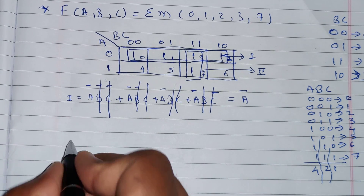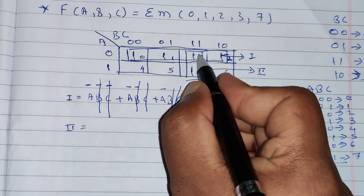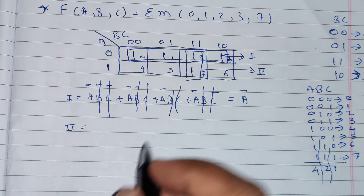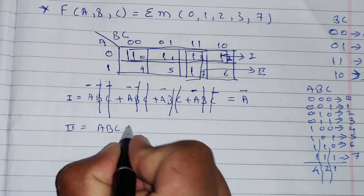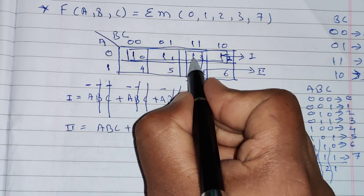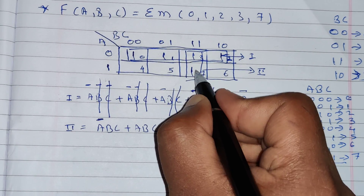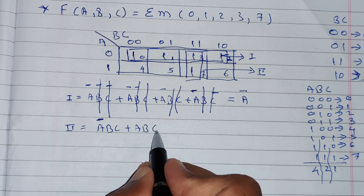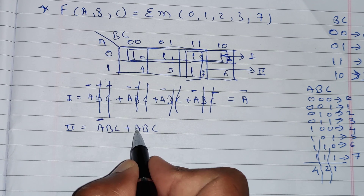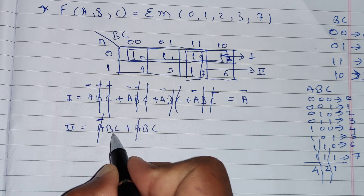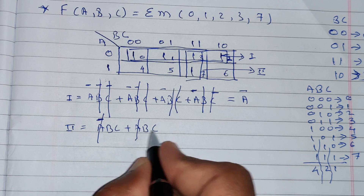For Group 2, there are two 1s, so we write two terms: A̅BC + ABC. For minterm 3 (011): A̅BC. For minterm 7 (111): ABC. Only A is changing (A̅ and A), so we cancel A. B and C are not changing, so we keep them. The result from Group 2 is BC.